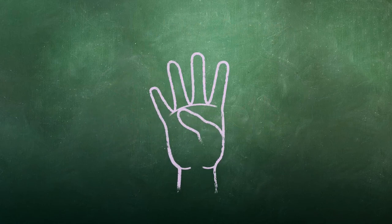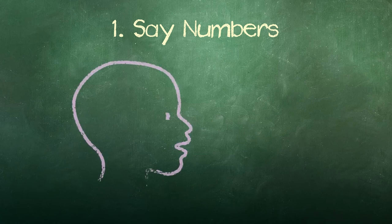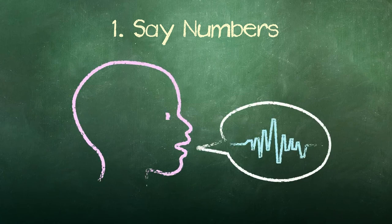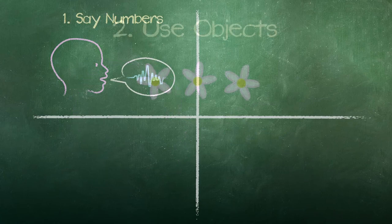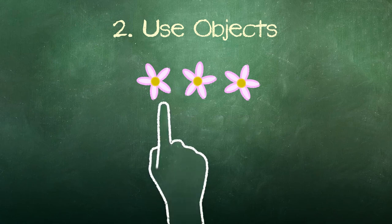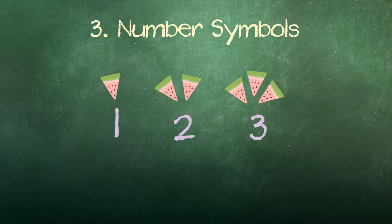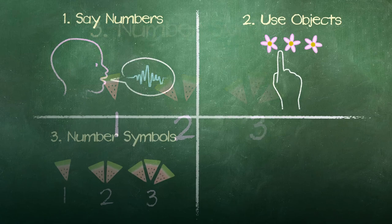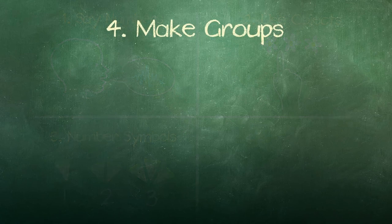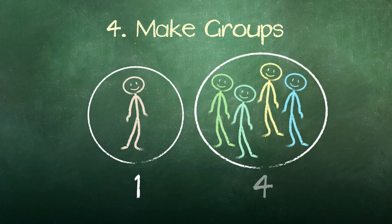Let's review these four essential skills. First is saying numbers in order. Second is counting objects. Third is learning the number symbols. And fourth is making sets or groups.